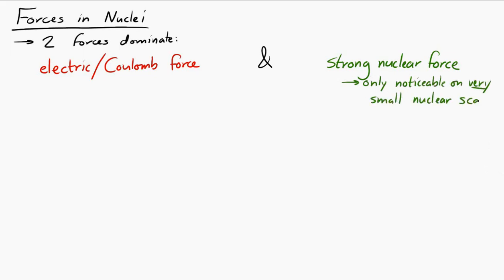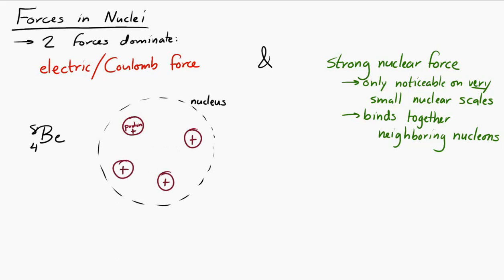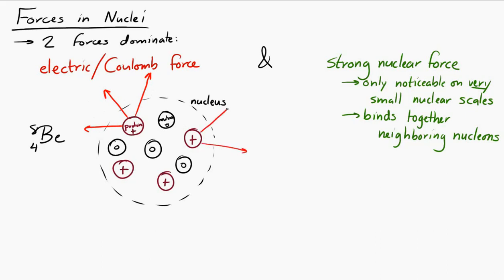The strong nuclear force is a binding force between nucleons. Let's imagine we have a nucleus — say beryllium-8 — which has four protons and four neutrons. The electric, or Coulomb, force is going to cause the positively charged particles to repel each other. Those protons are very close to each other and all have positive charge, so every proton repels every other proton. The neutrons are not involved in the Coulomb force because they have no charge.